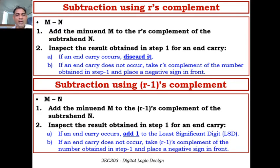If an end carry does not occur, take the R's complement of the number obtained in step 1 and place a negative sign in front. This is subtraction using R's complement. We will have examples of decimal and binary number subtraction using R's complement in class.